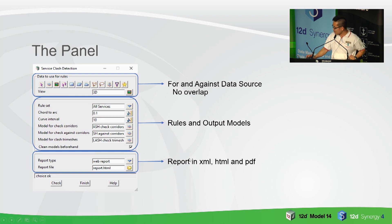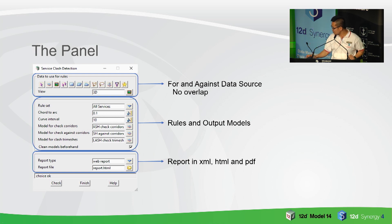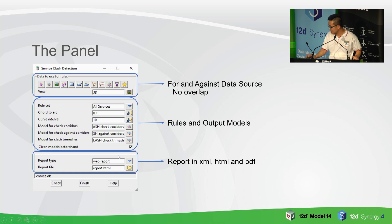The panel itself is very simple. It has a data source, you pick a rule set here, and then there is the standard conversion when you have a curve pipe or something, so you just convert to arcs. Then the output models — you have the option to run the same panel again and again, so we have a tick box to say you can clean all these models. And we have the report here, so you can report in either XML, HTML, or PDF.